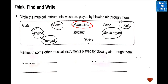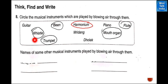Think, find and write. Circle the musical instruments which are played by blowing air through them. The wind instruments are: whistle, bansuri, trumpet, been, harmonium, mouth organ and flute.